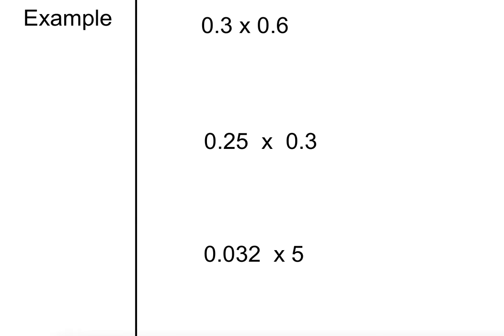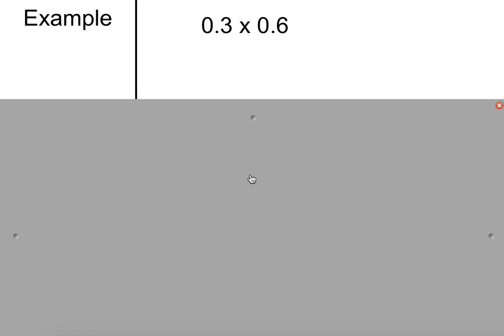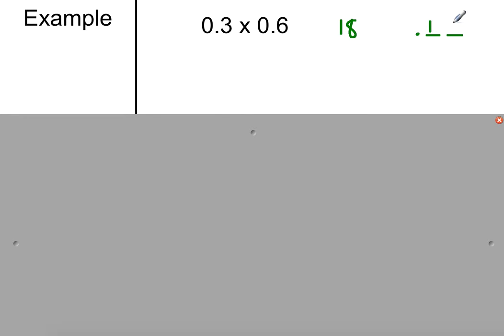So let's look at this next one. So if we think of it the same way as 3 tenths times 6 tenths, well, 3 times 6 is 18. Tenth times tenth is hundredths. So this has to be in the hundredths place, which would be here, so 0.18.